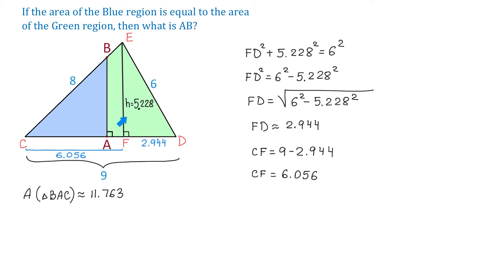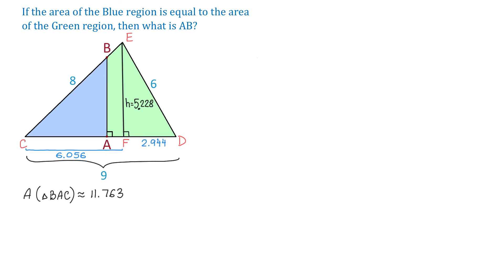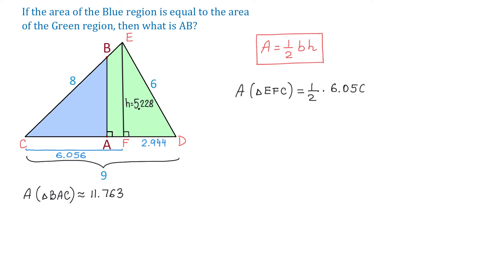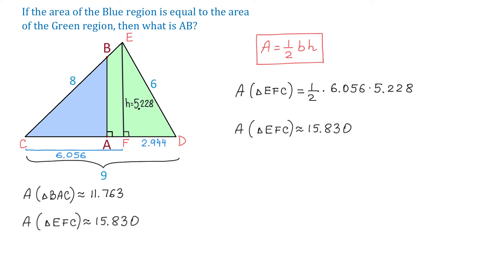Now in triangle EFC we know the height and we know the base, so we can find the area using the formula A equals one half times base times height. The area of triangle EFC equals one half times 6.056 times 5.228, which is approximately 15.830. I will move this information to the left as well.